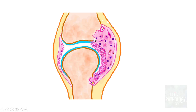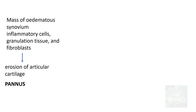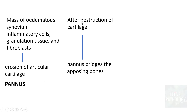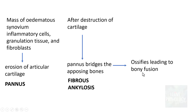This is the illustration of the microscopic features found in rheumatoid arthritis. The pannus is basically a mass of edematous synovium consisting of inflammatory cells, granulation tissue and fibroblasts, which leads to erosion of articular cartilage. Once there is destruction of articular cartilage, the pannus can bridge opposing bones leading to ankylosis. This is fibrous ankylosis, which can ossify leading to bony fusion — bony ankylosis.